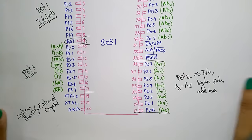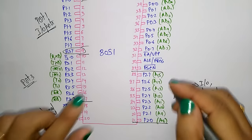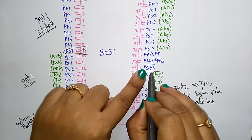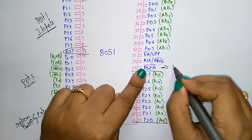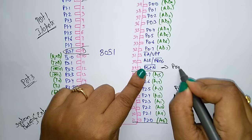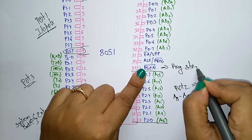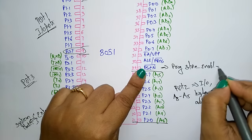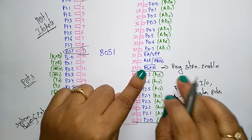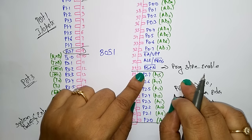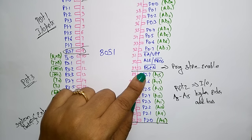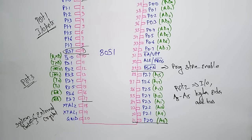Pin 29 is the Program Store Enable — PSEN. It is used to read a signal from external program memory. Whatever external program memory is present, it will be read using this PSEN pin.